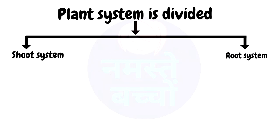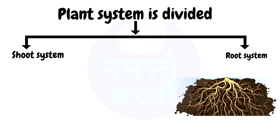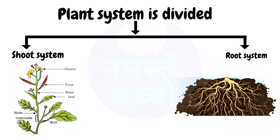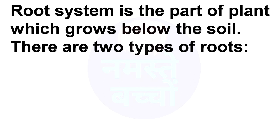The plant system is divided into two parts: shoot system and root system. The root system grows under the soil. The part of the plant growing above the soil is called the shoot system. It includes flowers, stem, leaves, buds, and fruits.